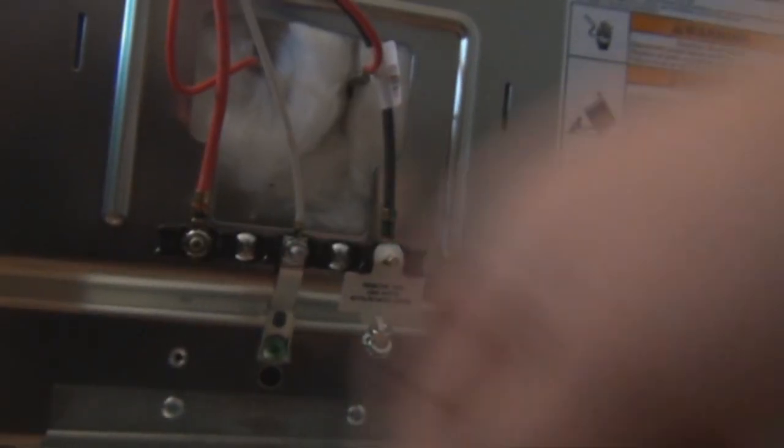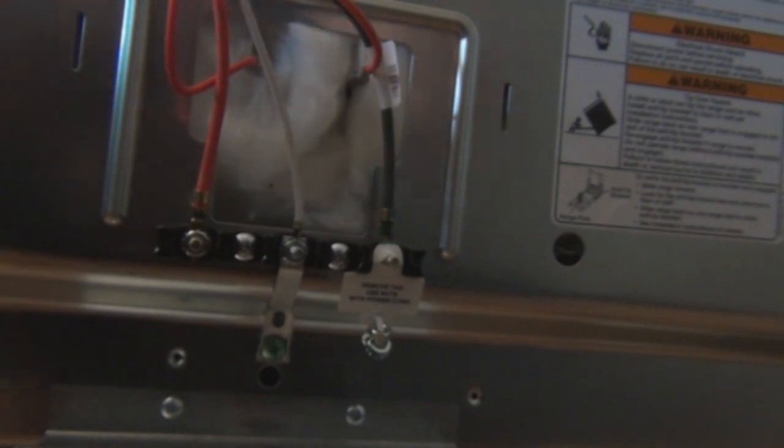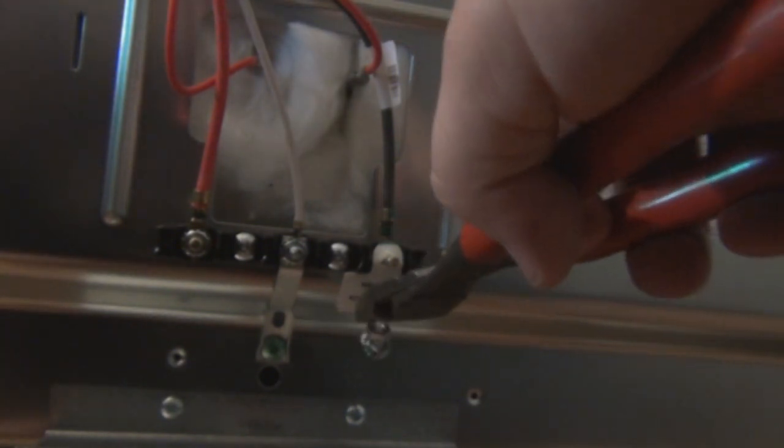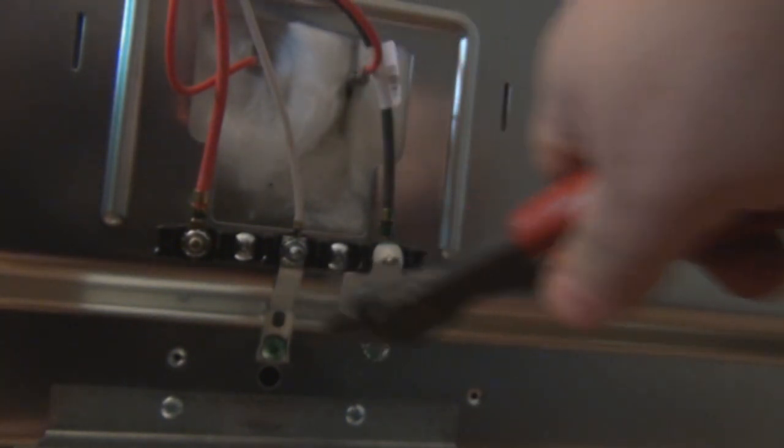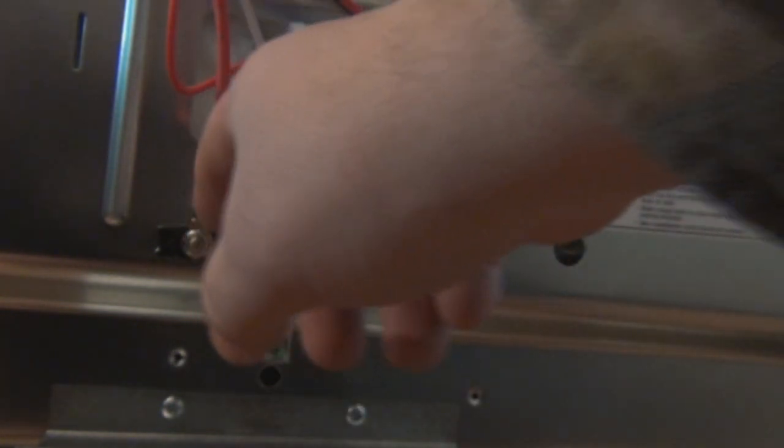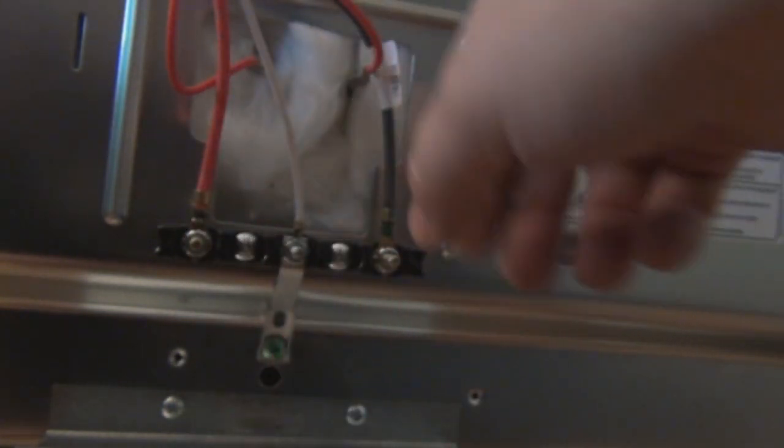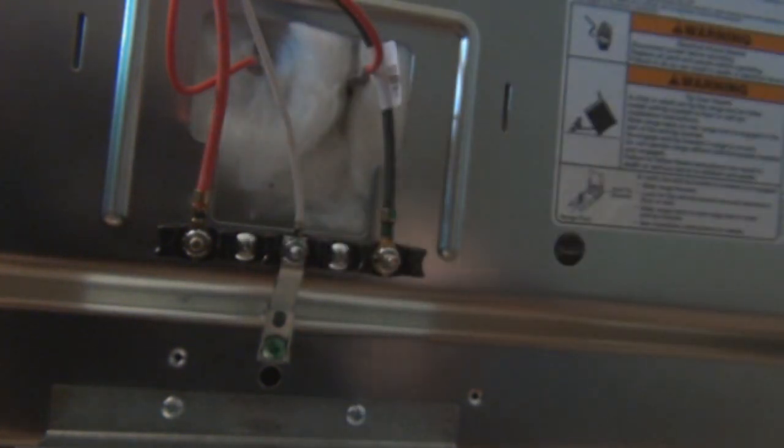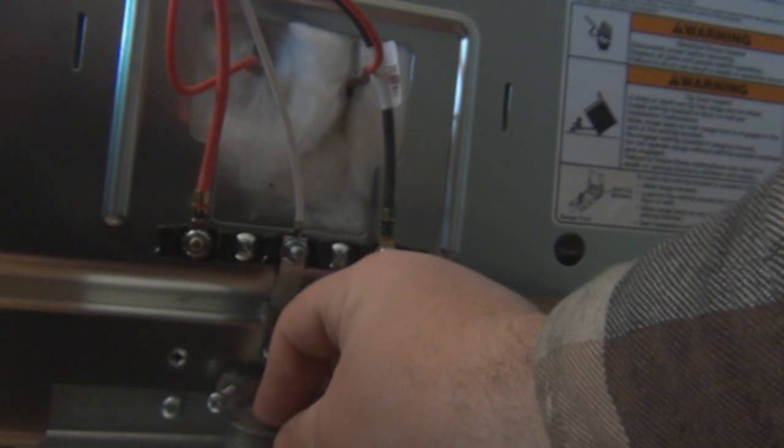All right, for starters, we're going to cut these nuts off right here. Pull this off the plug. These are our power wires: hot, hot, neutral. We're going to need a wire clamp that goes right here to hold the wire.